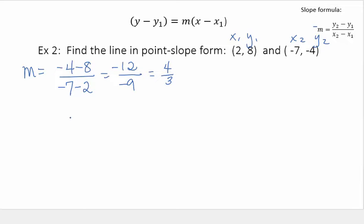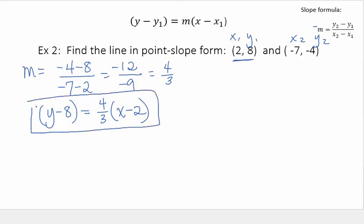Now I'm going to put it in point-slope form using this point first. So y minus 8 equals, the slope was 4 thirds, and then x minus 2. That's one solution to this problem using that first point.